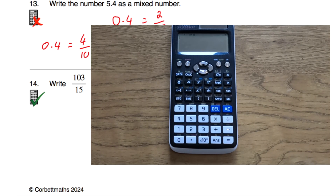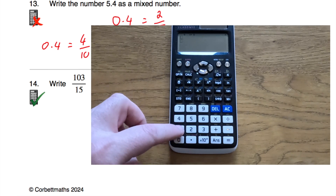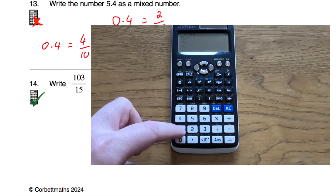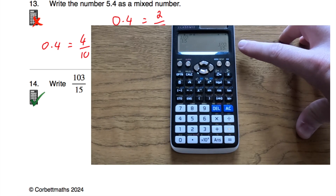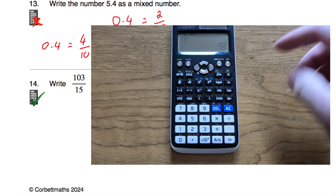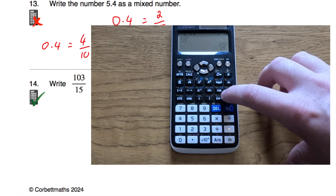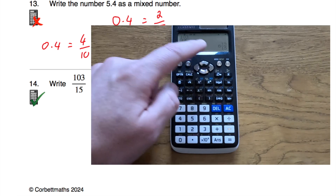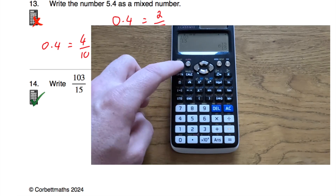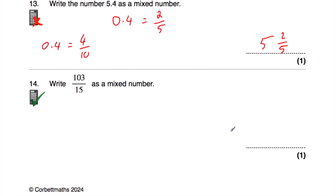On another calculator model, press the fraction button, type 103 on the numerator and 15 on the denominator, then press equals — it comes up as the top-heavy fraction 103 over 15. To get it to display as a mixed number, press shift and then the SD button, and it converts to a mixed number. You can press shift and that button again to convert back and forth between top-heavy fractions and mixed numbers. The answer is 6 and 13 fifteenths.